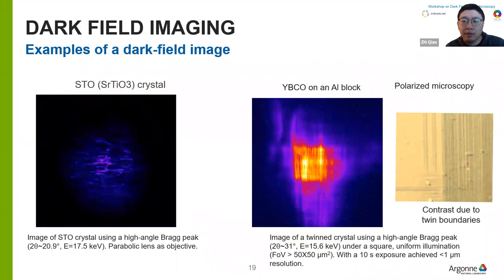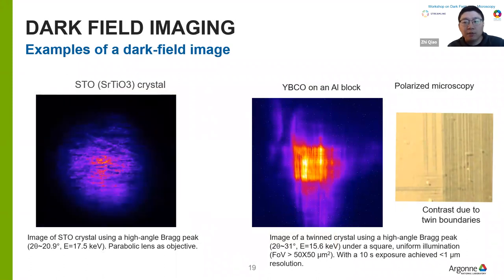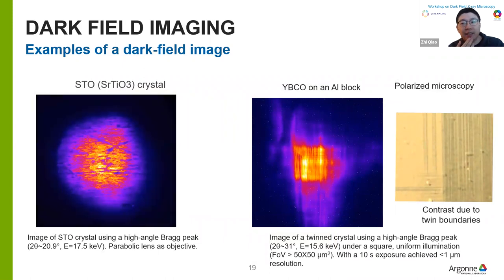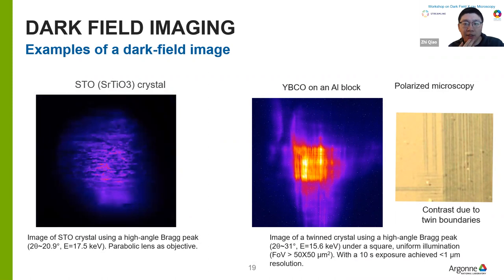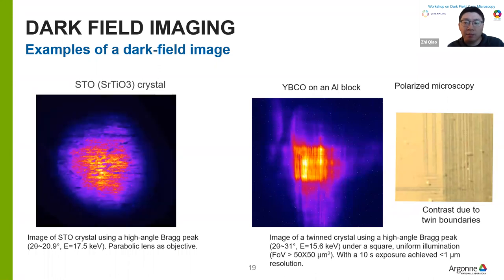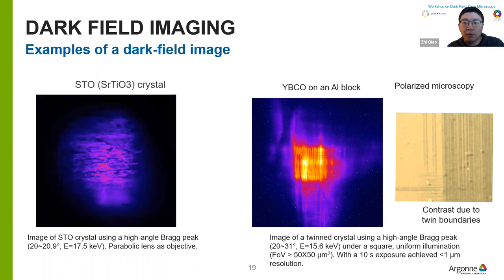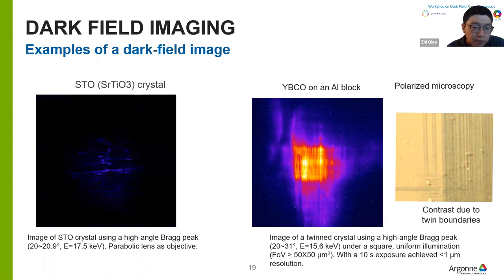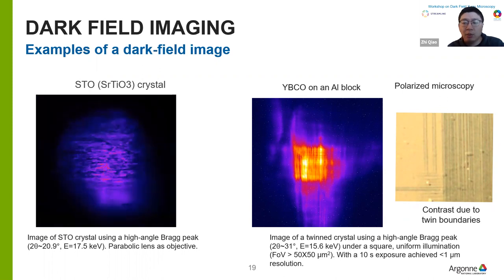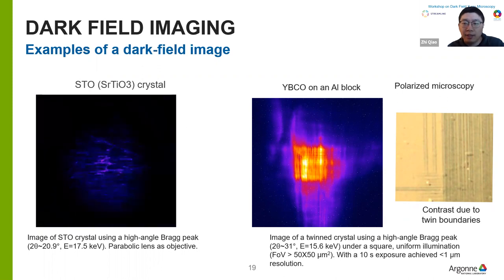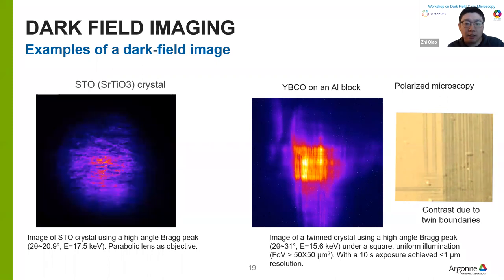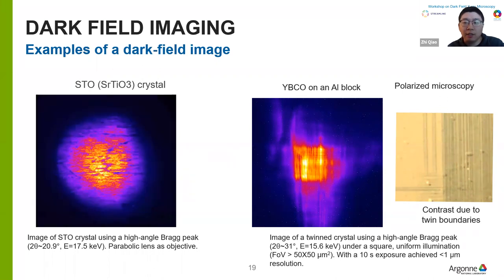We also tested dark field imaging of the microscope, but due to limited beamtime we didn't have much time for dark field imaging. As preliminary results, we first imaged an STO crystal with an objective lens of Beryllium transfocator. A dark field movie with different rocking angle theta scans shows some fine dislocation features in the STO crystal. Another sample tested was YBCO crystal, where we can clearly see twin lines on the crystal, corresponding to a spatial resolution of around one micrometer.